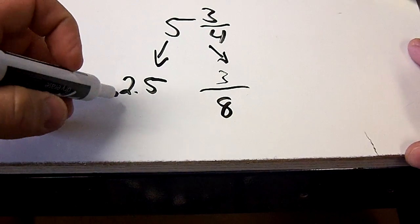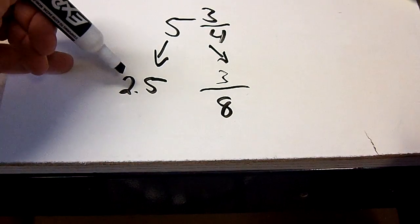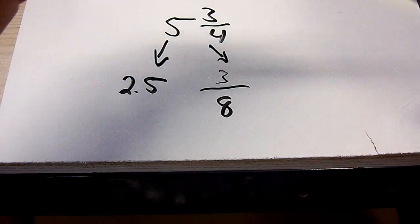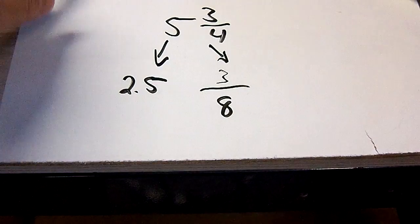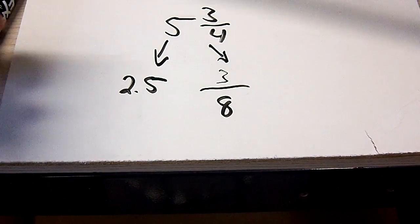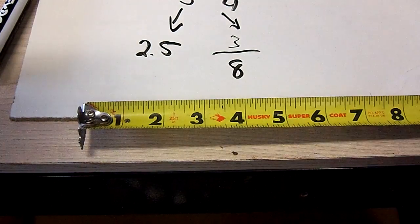So now the measurement that you need to find on your tape measure is going to be two and a half and another three-eighths. How am I going to do that? Are we going to add this together? No. You could, but that's just way too much work.